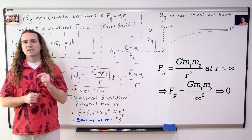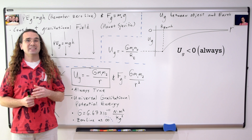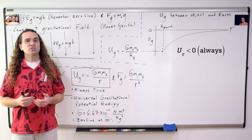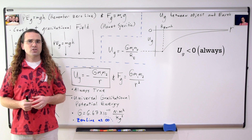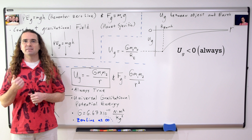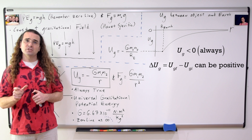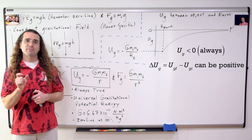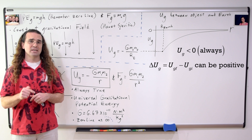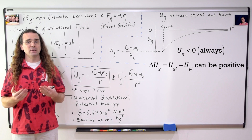Can universal gravitational potential energy ever be positive? No — universal gravitational potential energy will never be positive. This is because the zero line is where the two objects are infinitely far away from one another. This predetermined location for the zero line is why the negative is in the equation. But please realize, the change in universal gravitational potential energy can be positive. It is the value itself which will always be negative, but the change can be positive.